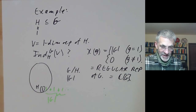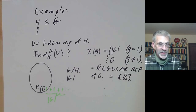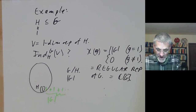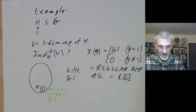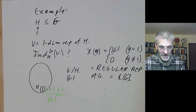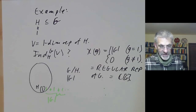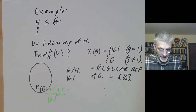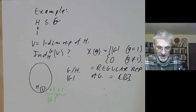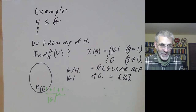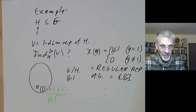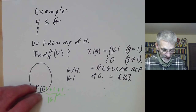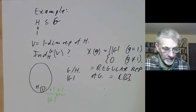In the next lecture, I'll be showing how to use induced representations to prove a famous theorem of Frobenius, which says that if you've got a Frobenius group — a permutation group such that no non-trivial element fixes more than one element — then it has a kernel.